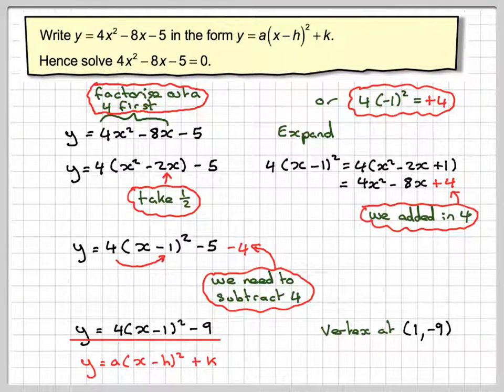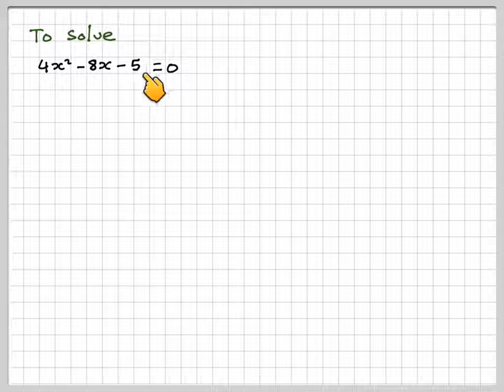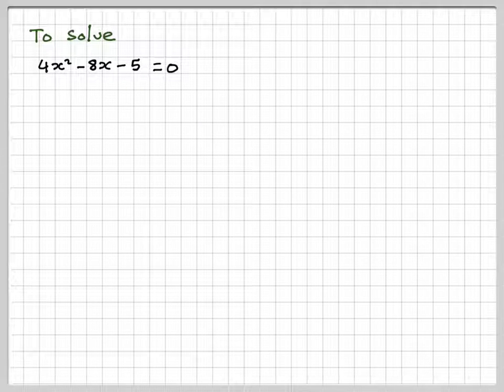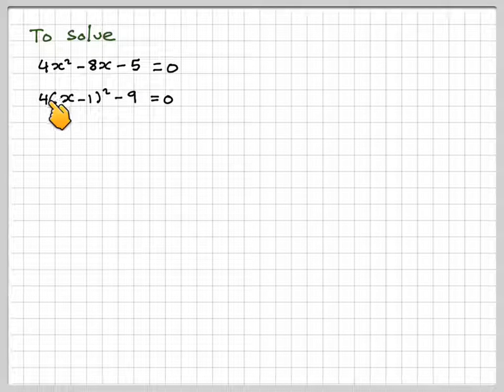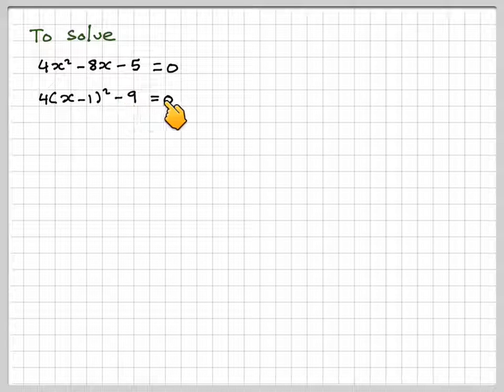Right, we're now asked to find the solution. So to solve 4x squared minus 8x minus 5 equals 0, we will use the completed square form. So we've got 4(x minus 1) squared minus 9 equals 0.